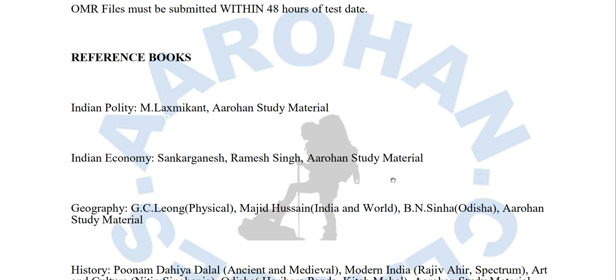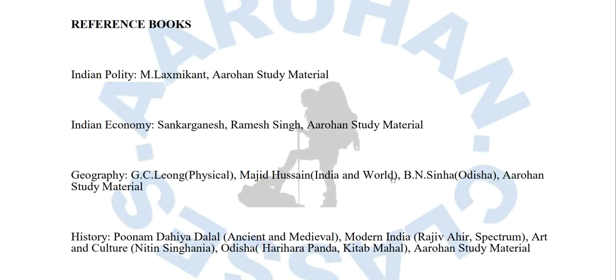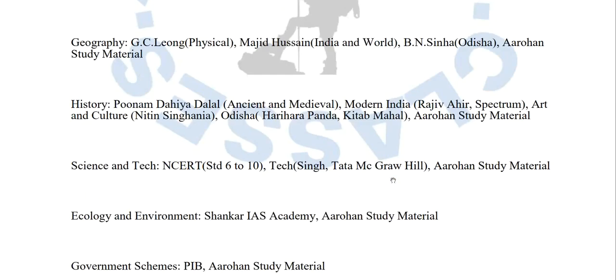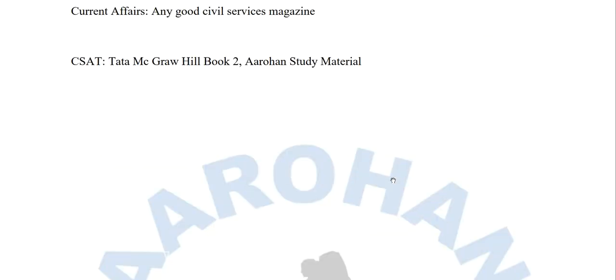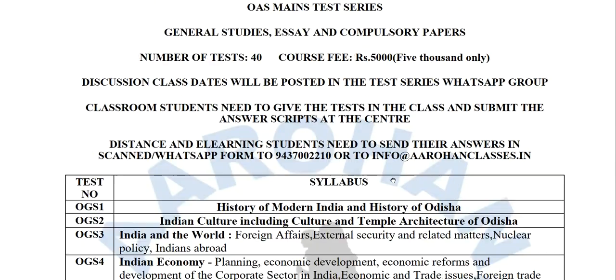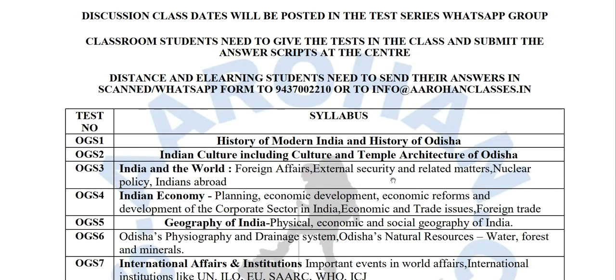The first batch starts from March 23rd and extends two months, as someone taking 100 tests will need at least that long. You choose your date and complete accordingly. At the end, reference books are listed — you can download the PDF and go through them. Detailed schedules are also provided in the PDF.